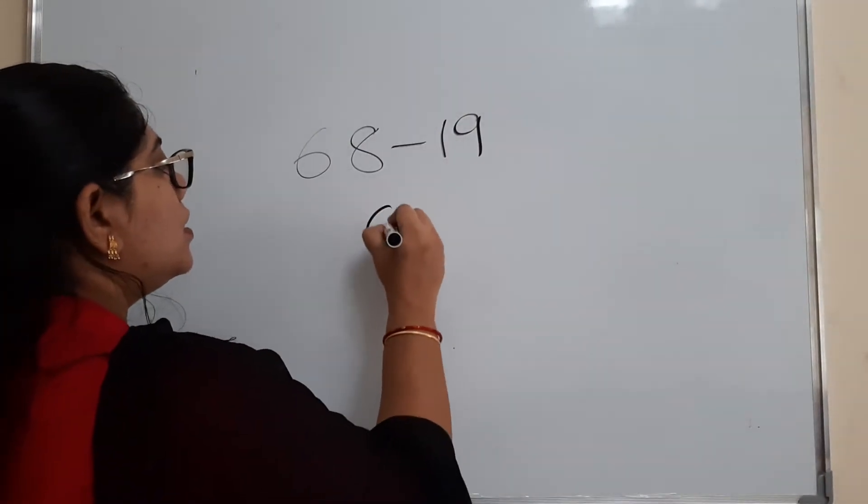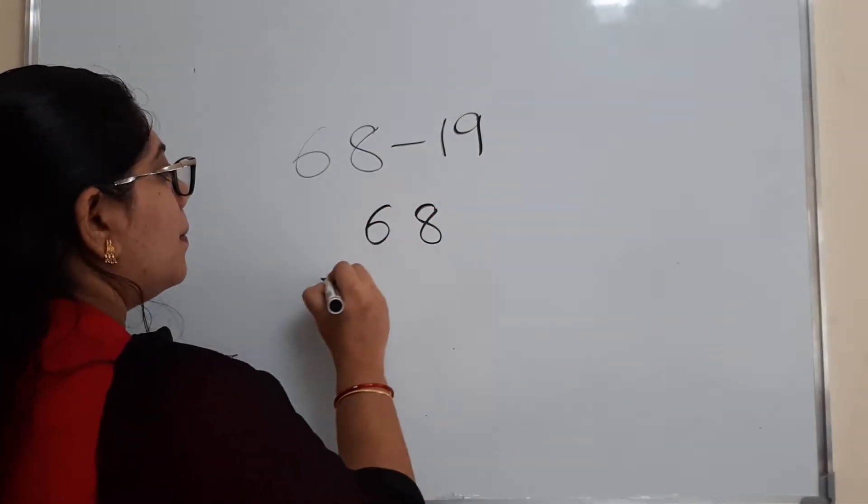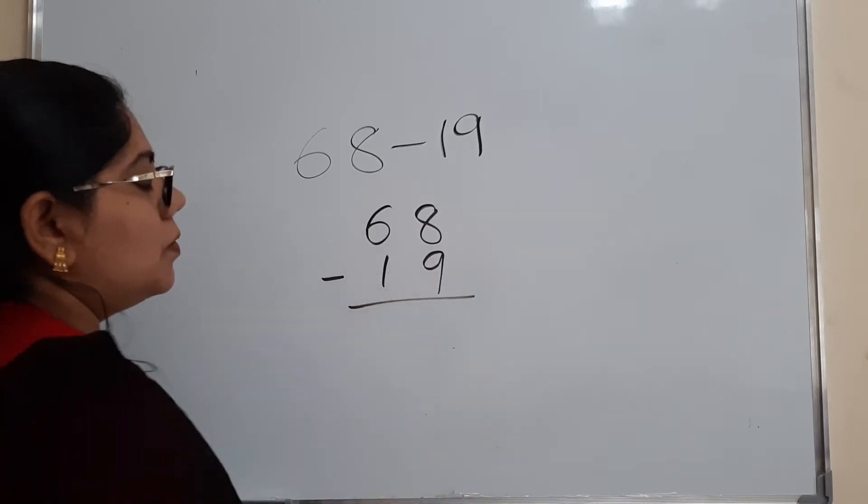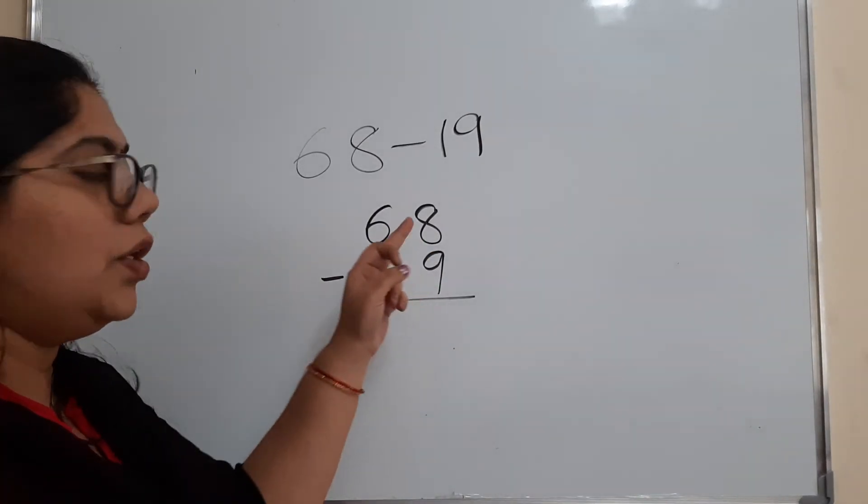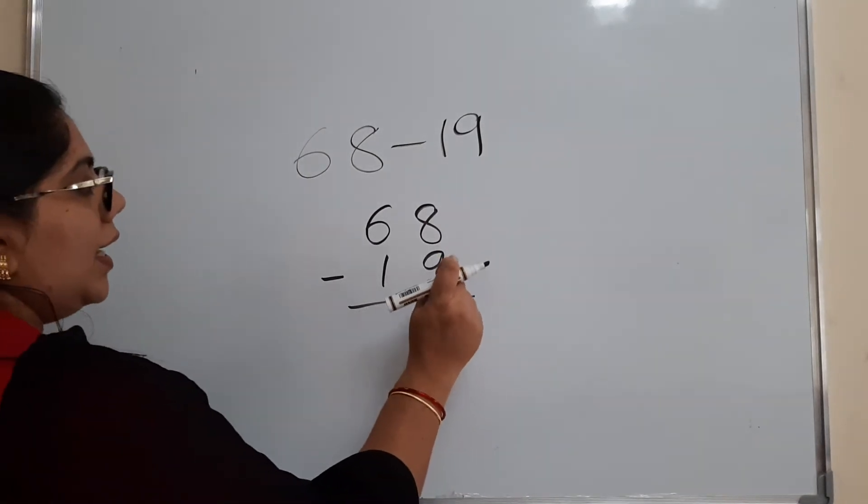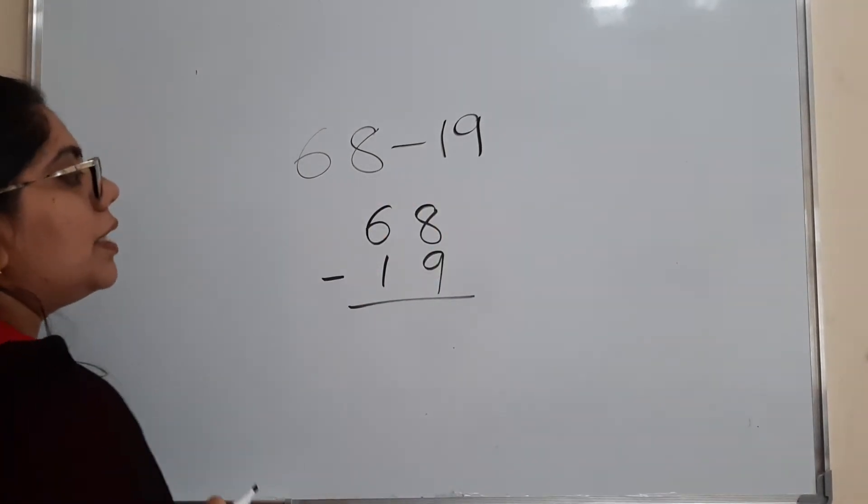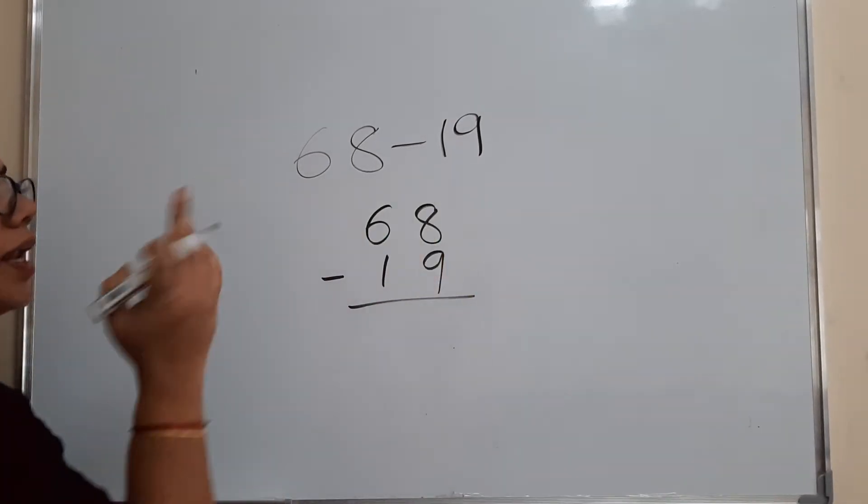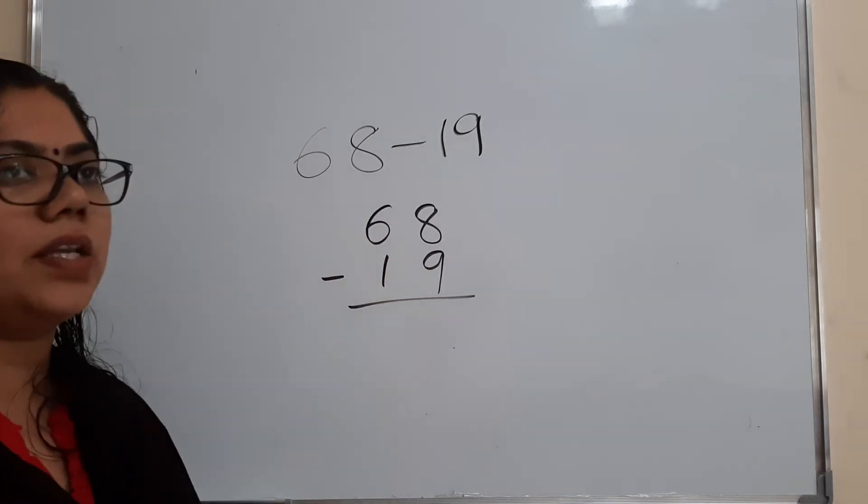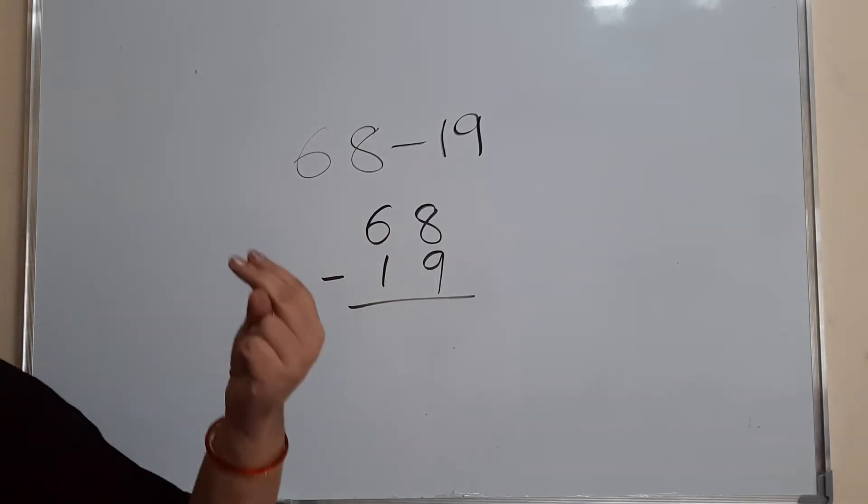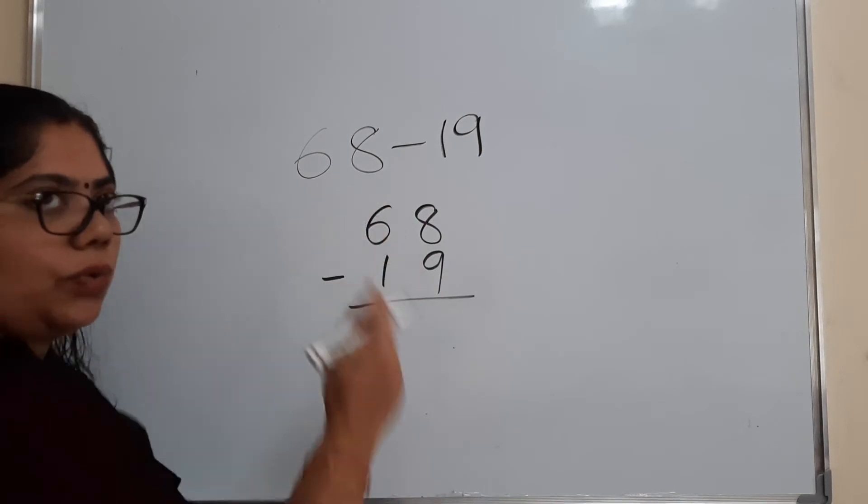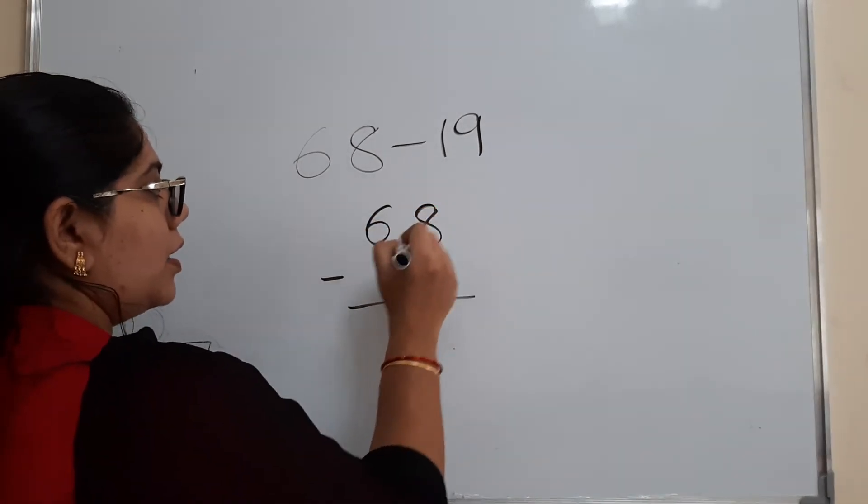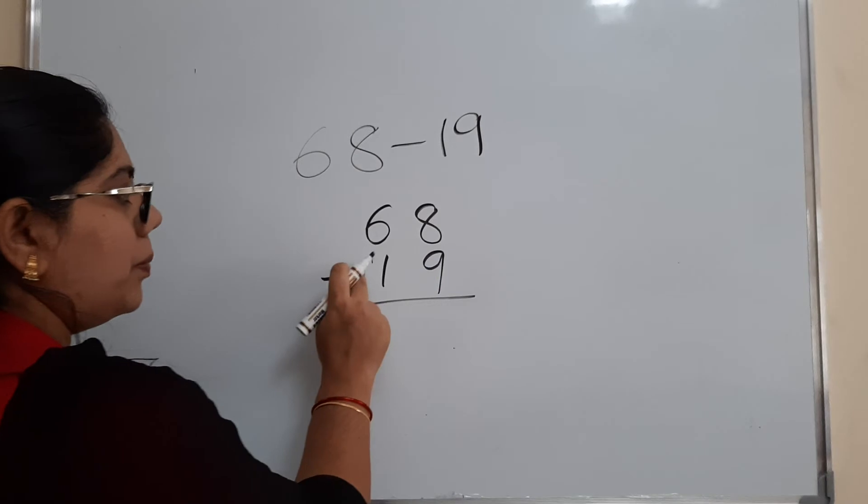Next question, 68 minus 90. So how will you do? With 9, what you will add and you will get 8? So you just check the 9 multiplication table. So 9 means it is very simple. 9 into 2 is 18. So if you add 9 two times you will get 18. Because 8 is less than 9, so you want to consider it as 18. So that 1 you want to put here.